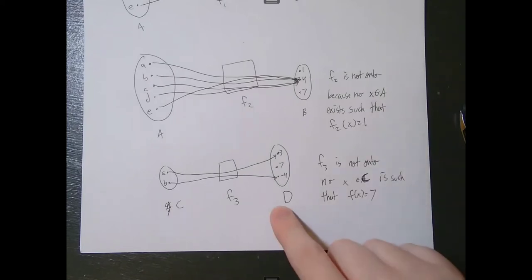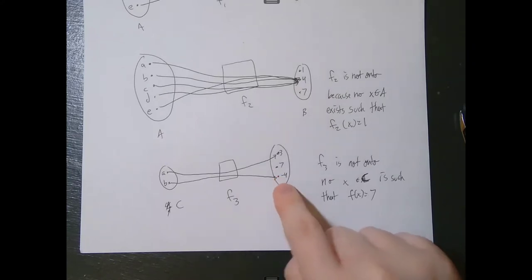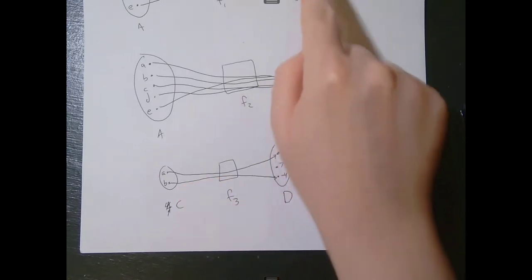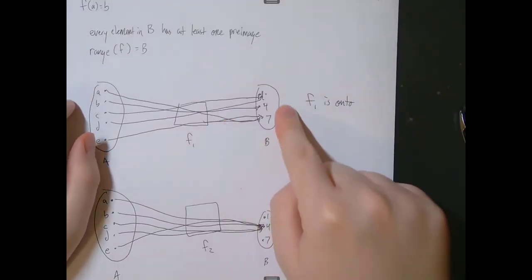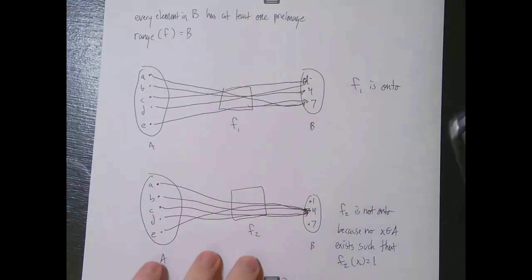Interestingly, that last example f₃ is actually one-to-one, because all elements in the codomain have at most one mapping. But it is not onto. And f₁ from earlier is onto but not one-to-one, because multiple elements map to seven and one. Now let's prove theorems showing when functions are onto and when they are not.